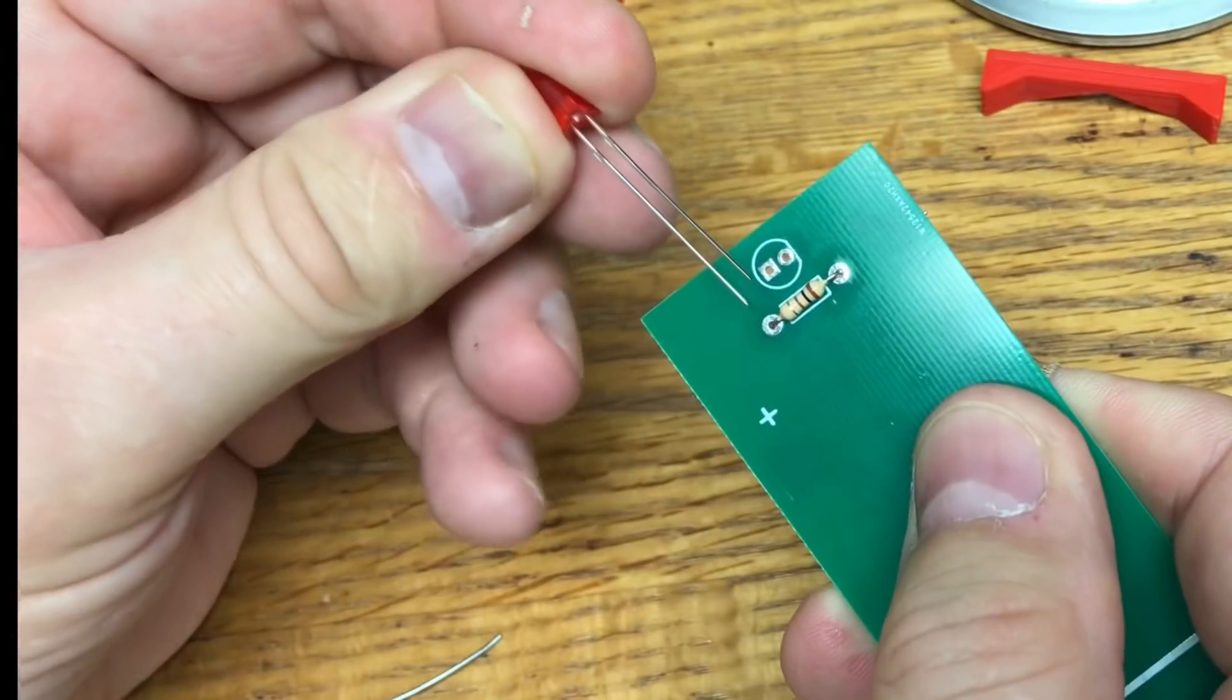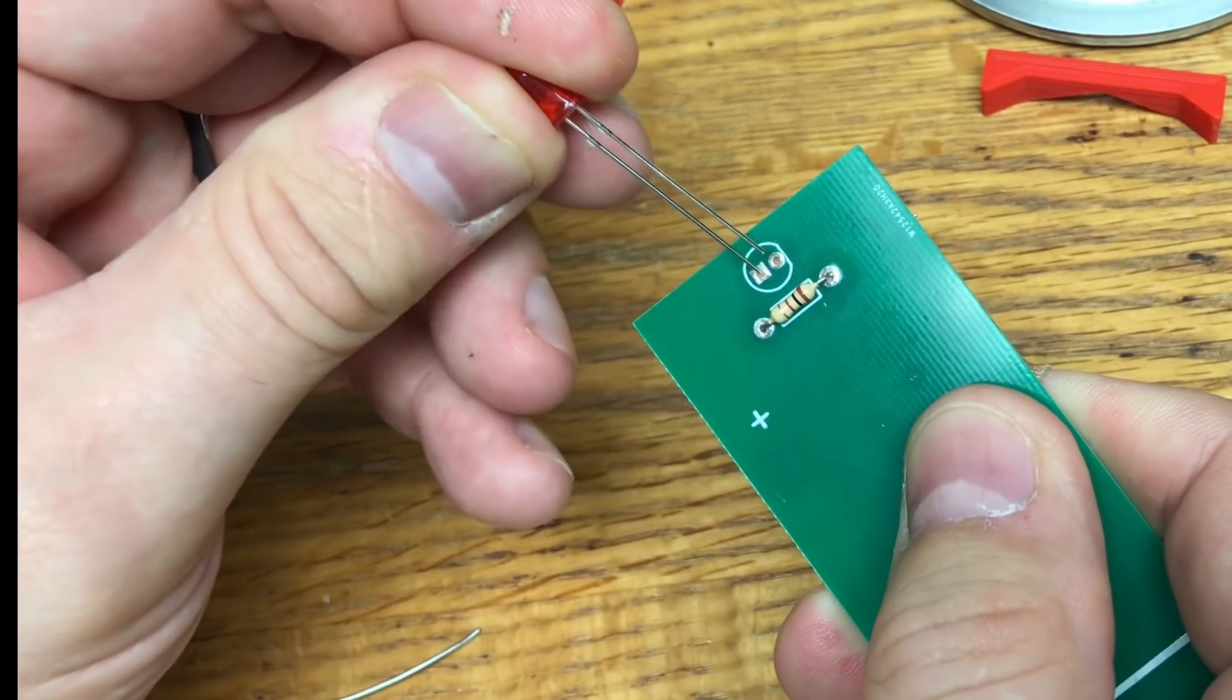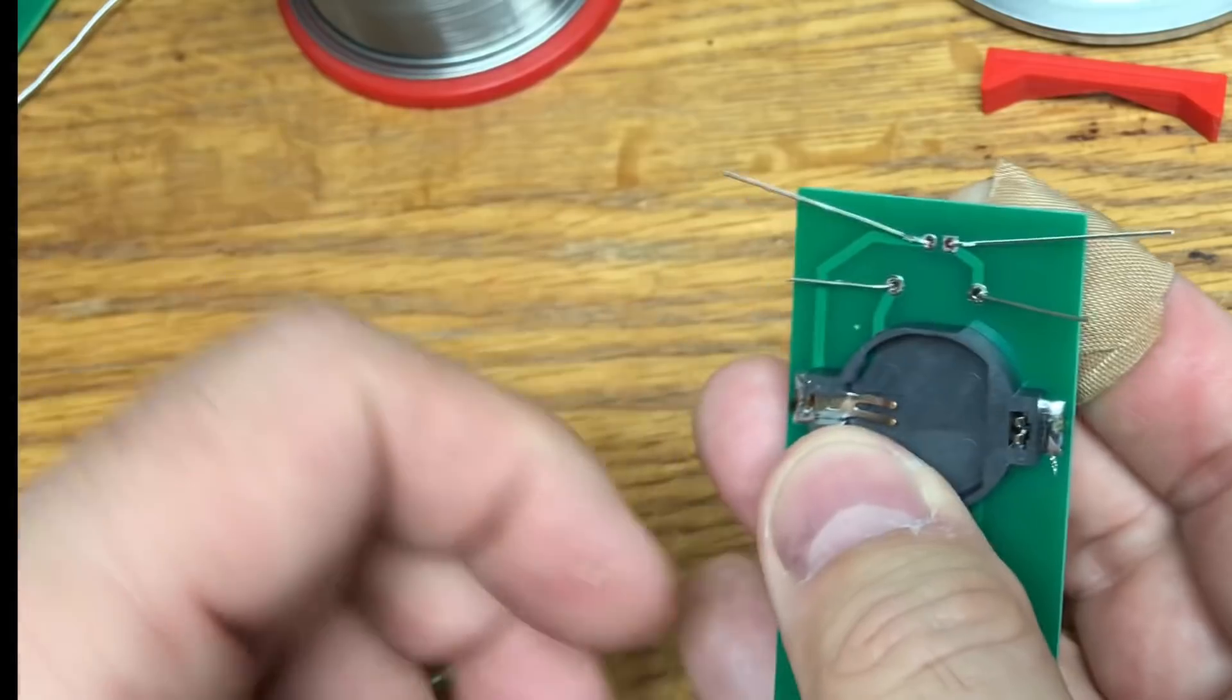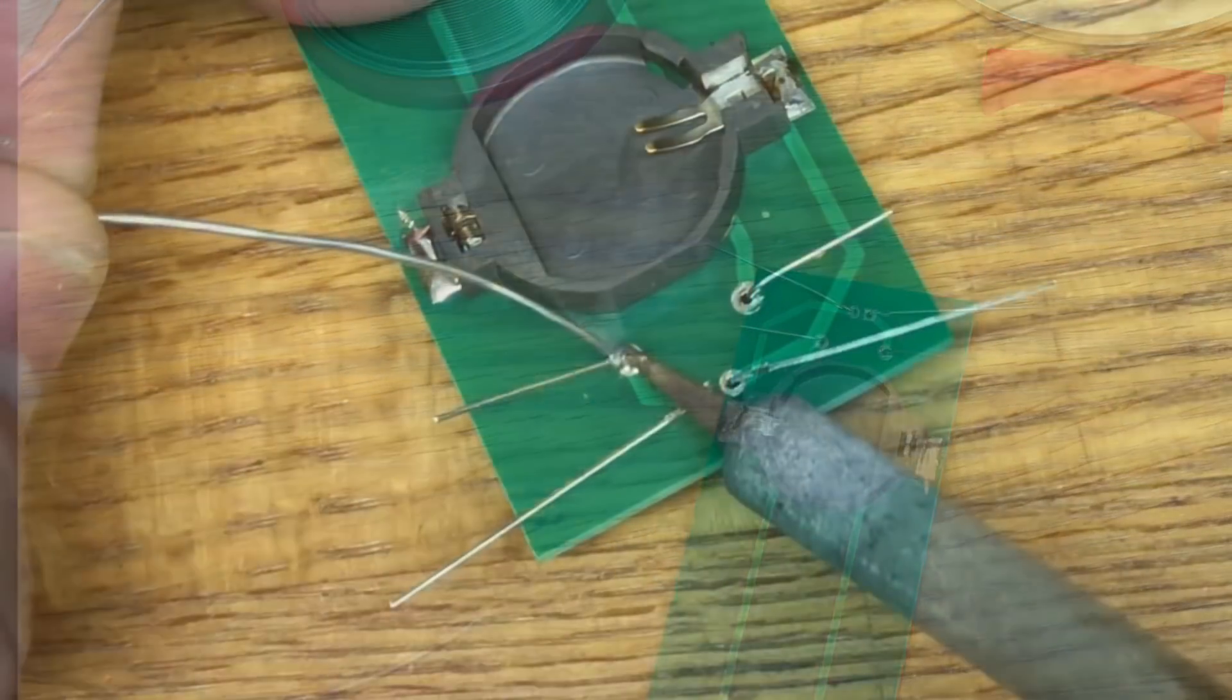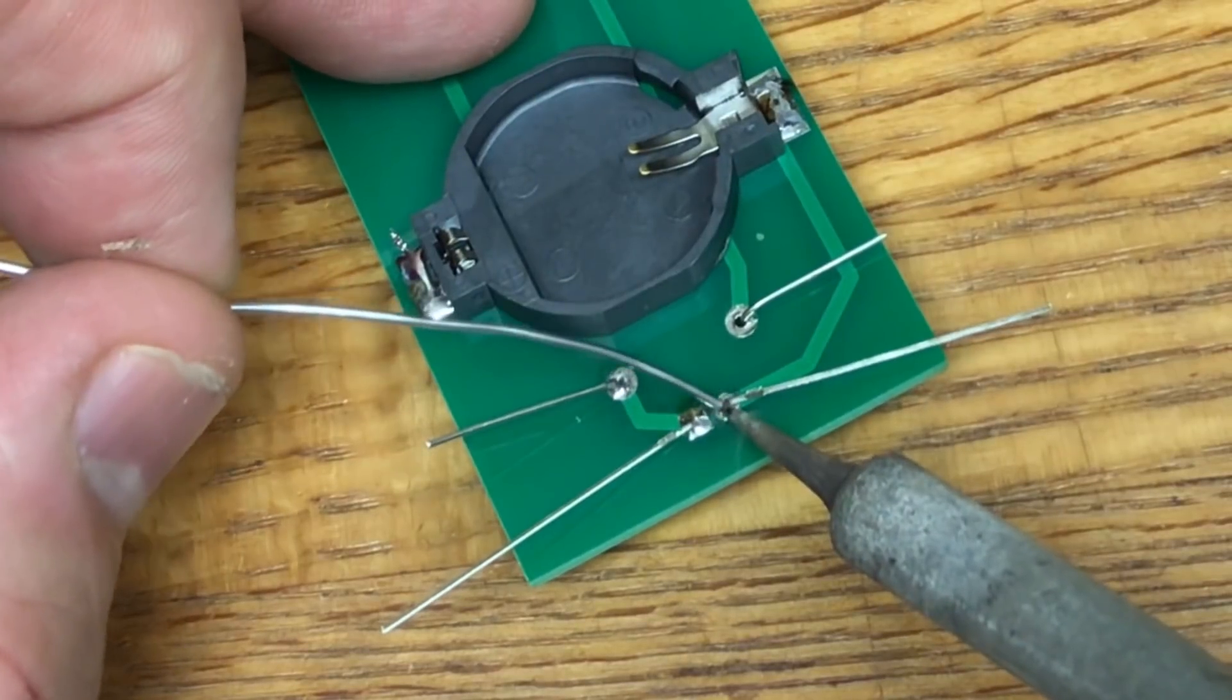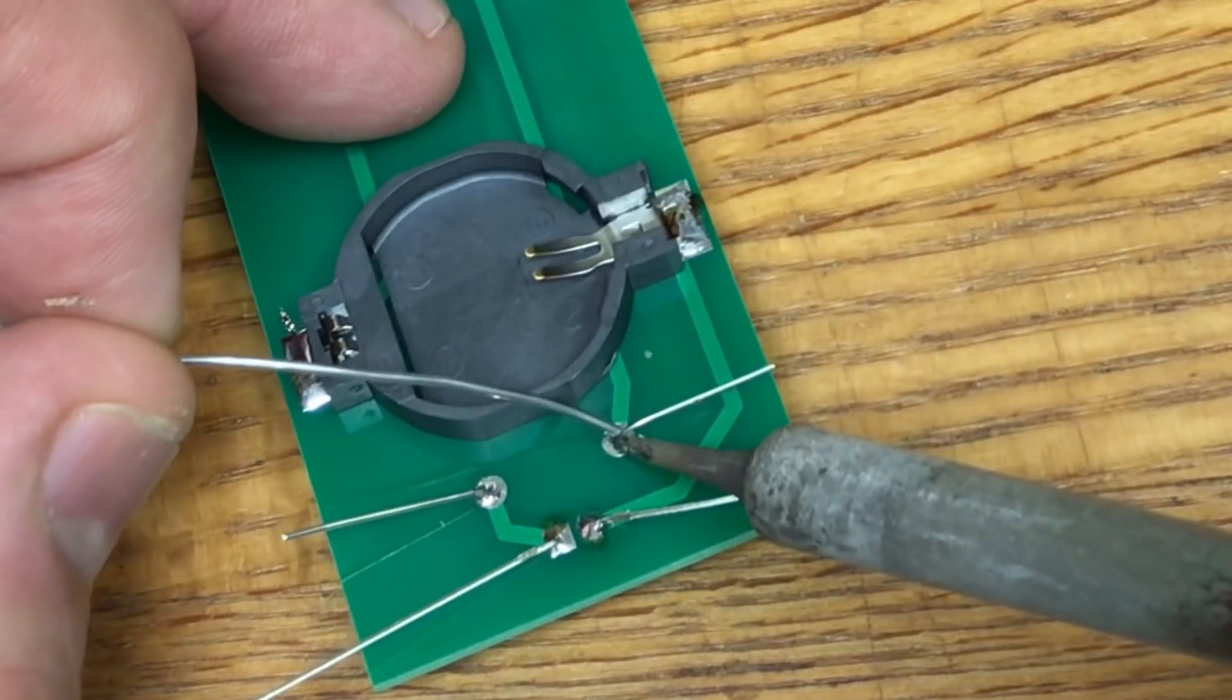The last part is the LED. The long lead goes into the square pad and then the other lead into the round pad and then bend those over. Now we can solder it. Just solder each connection. Should be pretty quick. And this thing is just about done.